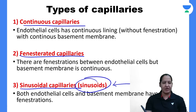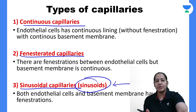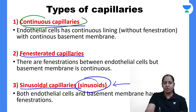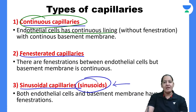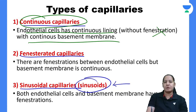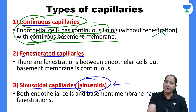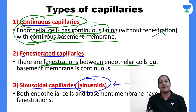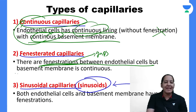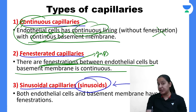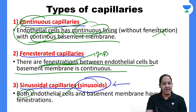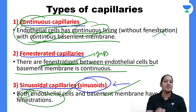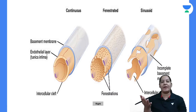To summarize: continuous capillaries have endothelial cells continuous without fenestration and the basement membrane is also continuous. Fenestrated capillaries have fenestrations — meaning gaps — between endothelial cells, but the basement membrane is intact and continuous. Sinusoidal capillaries have fenestrations in both the endothelial cells as well as the basement membrane.